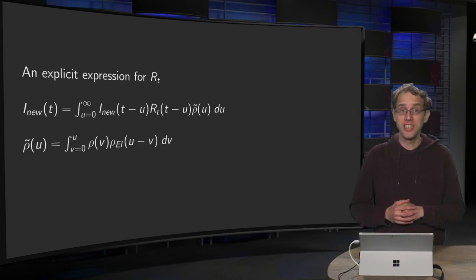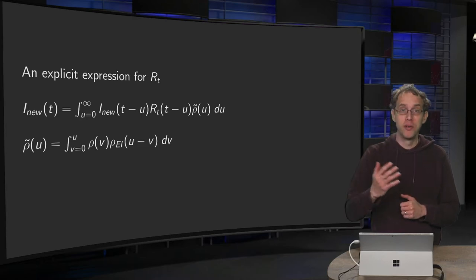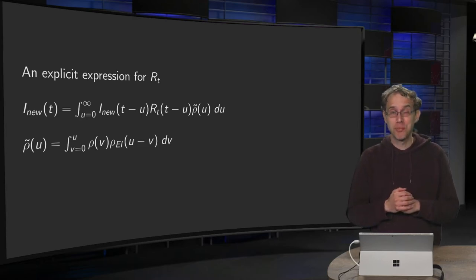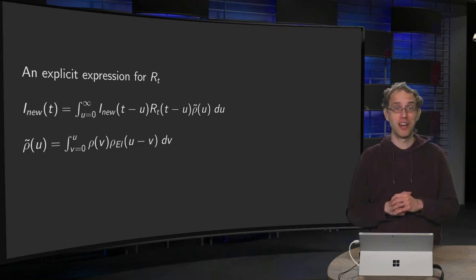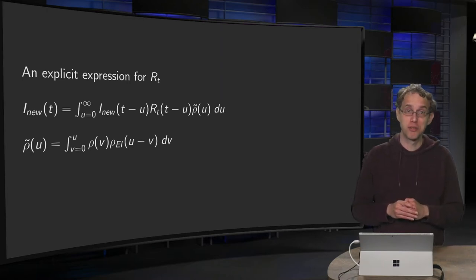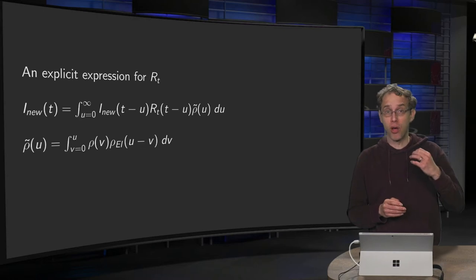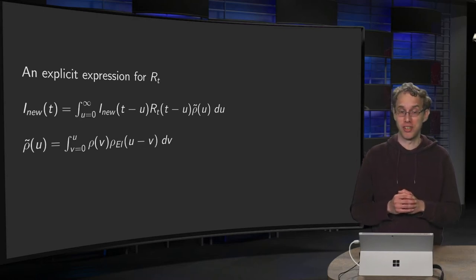The reproduction number Rt is given in terms of an integral equation. It would be much nicer if we would have an explicit expression. Fortunately, we are able to find such an expression using a Laplace transform. In this video you will see how we can find this explicit expression and we will also discuss the assumptions that we need to make.